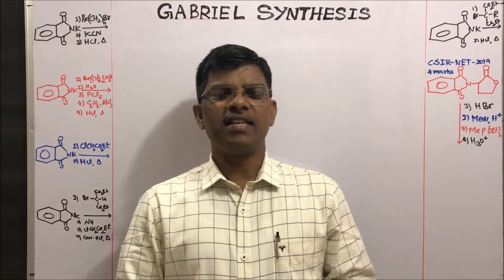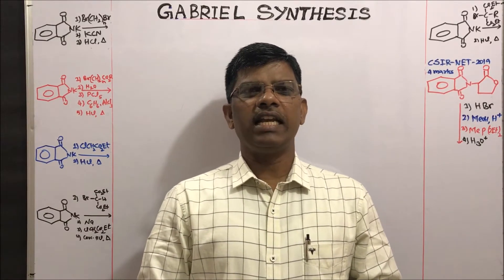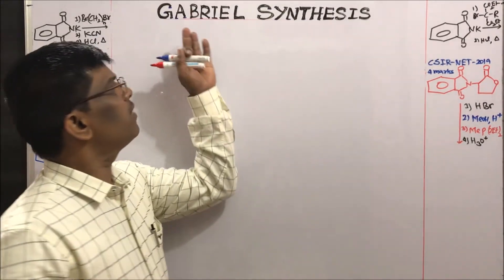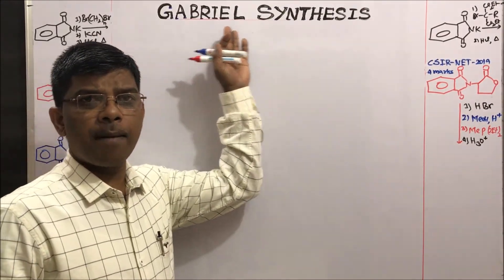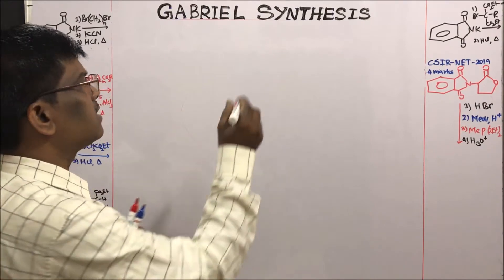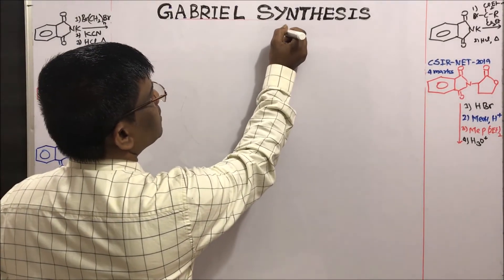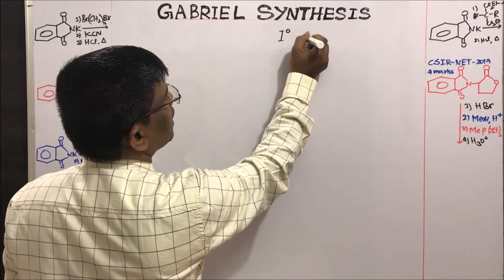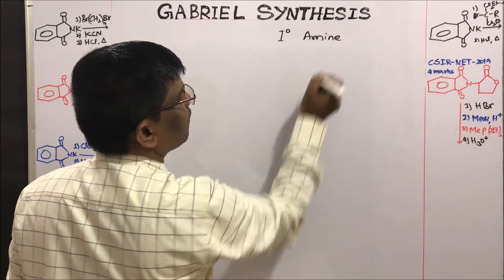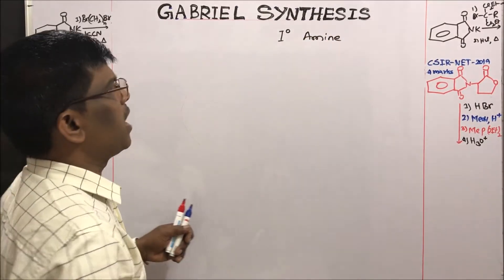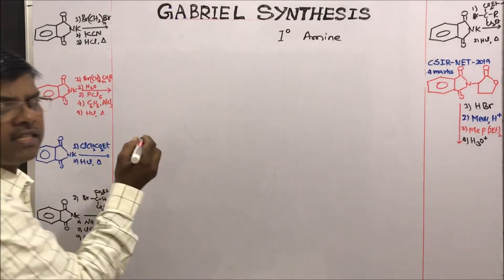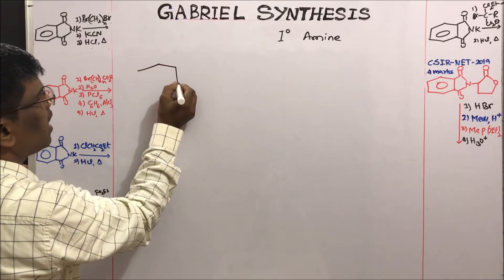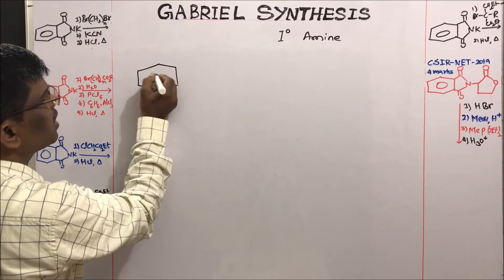Welcome to the series of organic chemistry name reactions. Dear students, today we are going to learn a very important name reaction: Gabriel synthesis. This synthesis prepares primary amines, free from secondary and tertiary amines. So what is this reaction? Let us see — let us take potassium phthalimide.